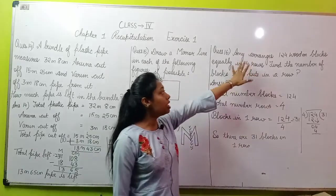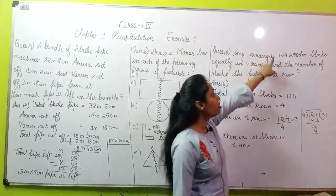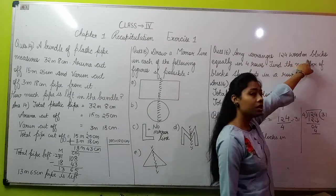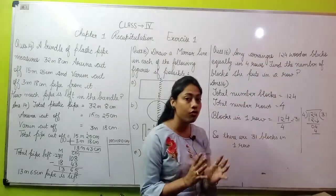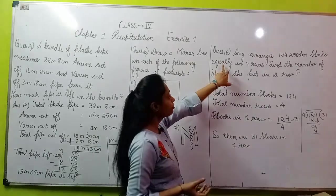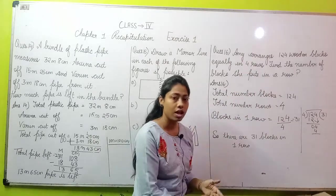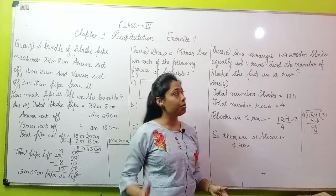Moving to the next question, question number 16. Amy arranges - Amy is the name of a person. Amy arranges 124 wooden blocks. Amy has 124 wooden blocks, small pieces of wood. Amy arranges these equally in 4 rows. Rows means 4 different lines.